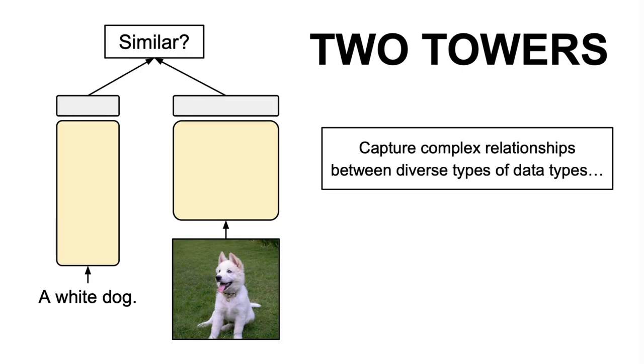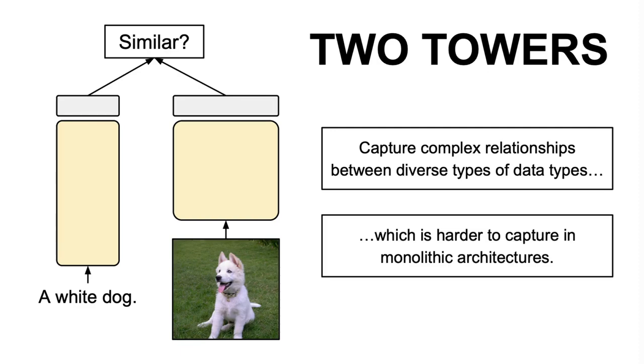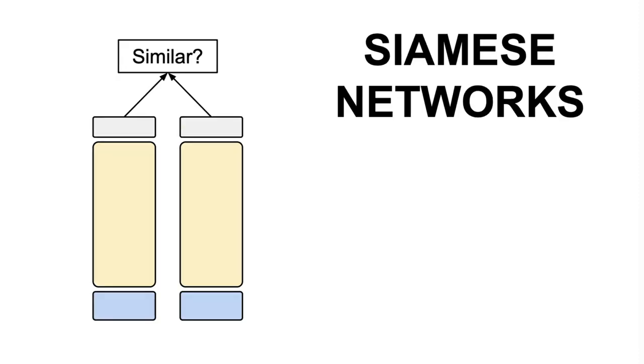The strength of the two towers model lies in its ability to capture complex relationships between diverse types of data, like textual and visual data. By leveraging separate towers, it allows the network to specialize in extracting features specific to each modality before fusing them together. This can result in a more robust representation of the overall data, providing a nuanced understanding that may be challenging to achieve with a single monolithic network.